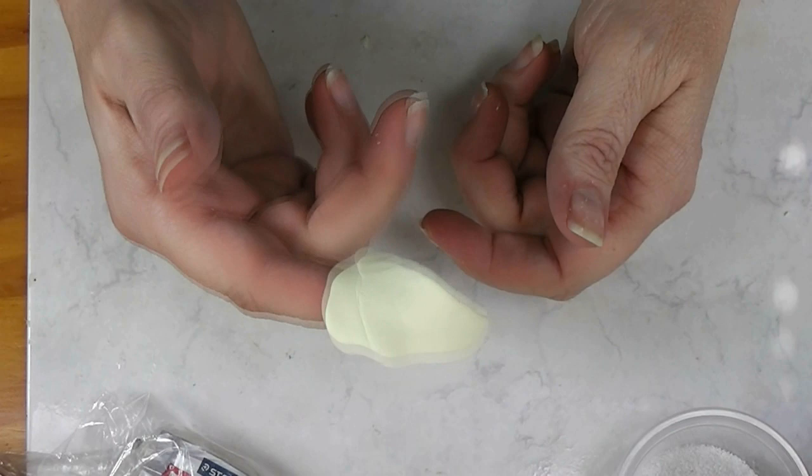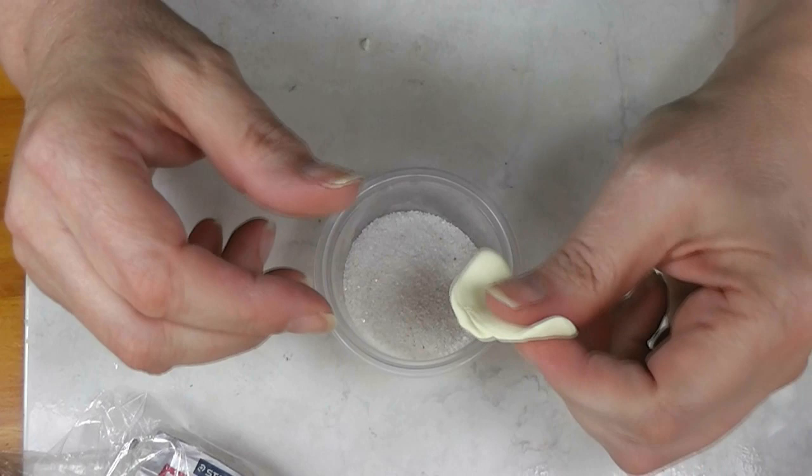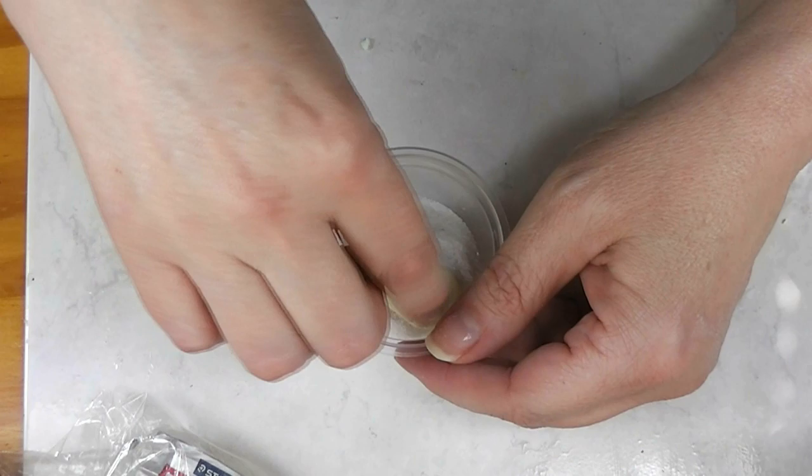So, to make the ice cream itself we need two things. We need our clay, and it needs to be really well conditioned. I ran it through the pasta machine. I've been kneading it here for a while. And we need sand. The sand needs to be in a color similar to your ice cream color.